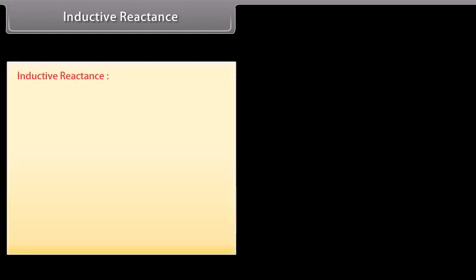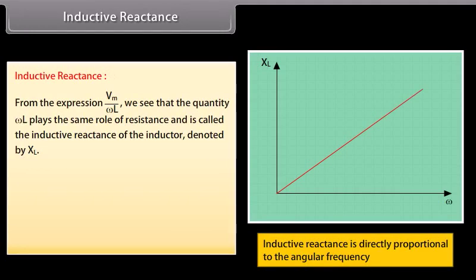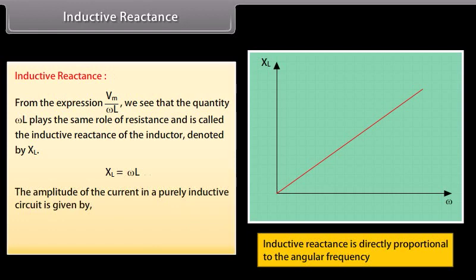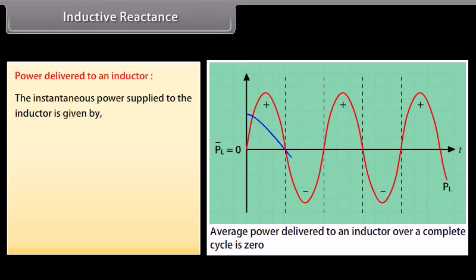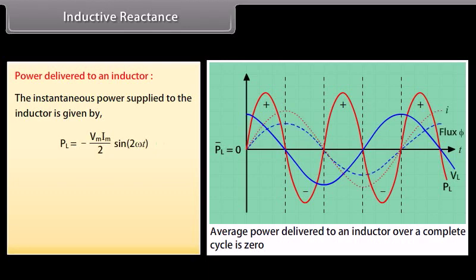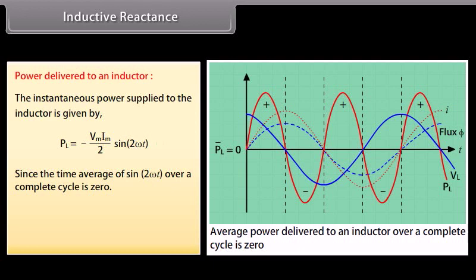Inductive reactance: from the expression Vm/(ωL), the quantity ωL plays the same role as resistance and is called the inductive reactance, denoted XL, where XL = ωL. The amplitude of the current in a purely inductive circuit is Im = Vm/XL. The instantaneous power supplied to the inductor is −(Vm Im/2) sin(2ωt). Since the time average of sin(2ωt) over a complete cycle is zero, the average power delivered to an inductor is zero.